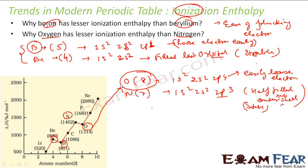So it is all about how easy or difficult it is to lose electrons. The best thing is to look at the electronic configuration — from that you can determine if there is an issue of stability, such as half-filled or fully-filled orbitals. You can also see the number of shells and nuclear number. If you have the electronic configuration of two different elements, you can easily guess which will have higher or lower ionization enthalpy.